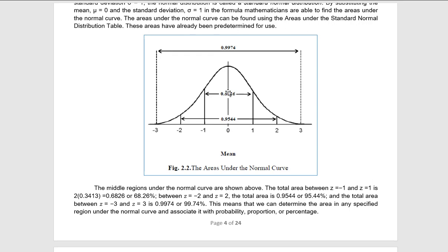Remember, one of the characteristics of the normal distribution is that the line does not touch the baseline — it is asymptotic. That is why the standard deviation is only estimated up to 0.9974. From z equals negative 1 to z equals 1, the area is 0.6826. From z equals negative 2 to positive 2, the area is 0.9544. So if you are asked for the area from negative 1 to 0, you can just divide 0.6826 by 2, which gives 0.3413. That is how you get the different areas under the curve.